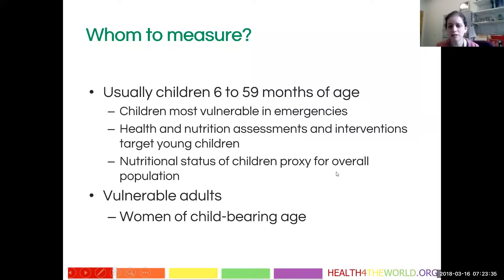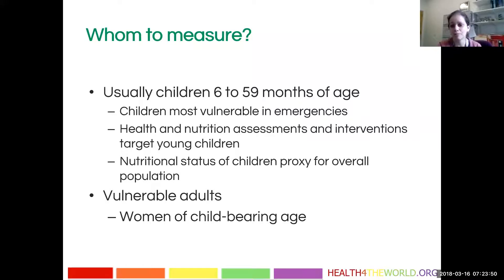Nutritional status of children is also a proxy for the overall population when looking at adults and elderly as well. If children are malnourished, adults are probably even worse off because parents tend to give everything they can to their kids and sacrifice for themselves. Women of childbearing age is another public health focus since that affects intergenerational nutritional status and health.